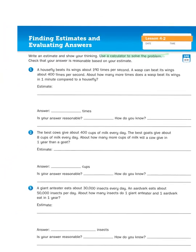And then it says, check that your answer is reasonable based on your estimate. So we're going to kind of break down this first problem together, and then I'm going to let you try the other two on your own. Problem one says, a housefly beats its wings about 190 times per second.